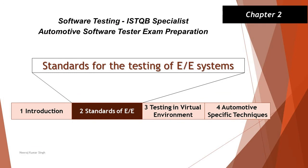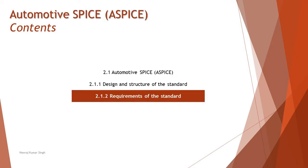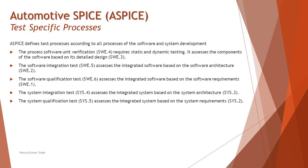Hello friends and greetings for the day. Welcome back to another tutorial on ISTQB Specialist Automotive Software Tester. We are in Chapter 2 still, working on the first topic — Automotive SPICE — where we have another topic to be discussed: 2.1.2 Requirements of the Standard. As part of requirements of the standard we will be discussing the different processes and standards generally covered as part of ASPICE, which is Automotive SPICE.